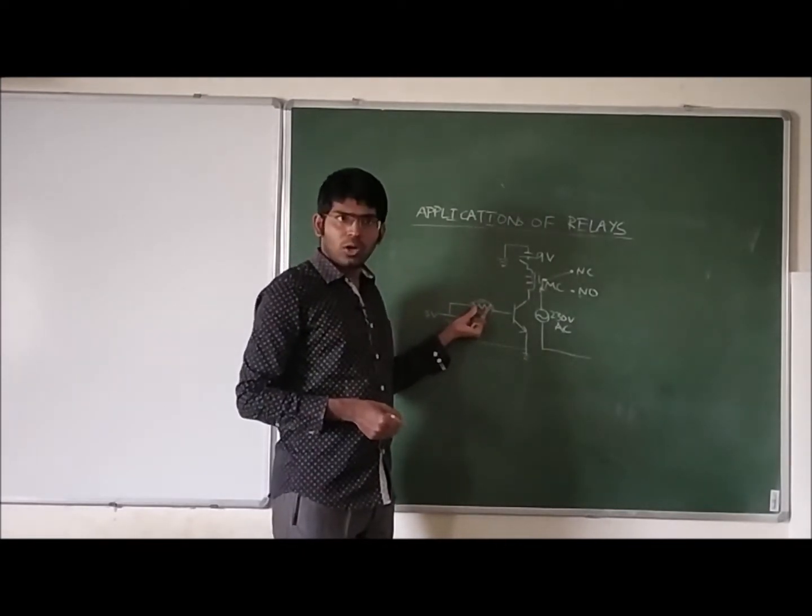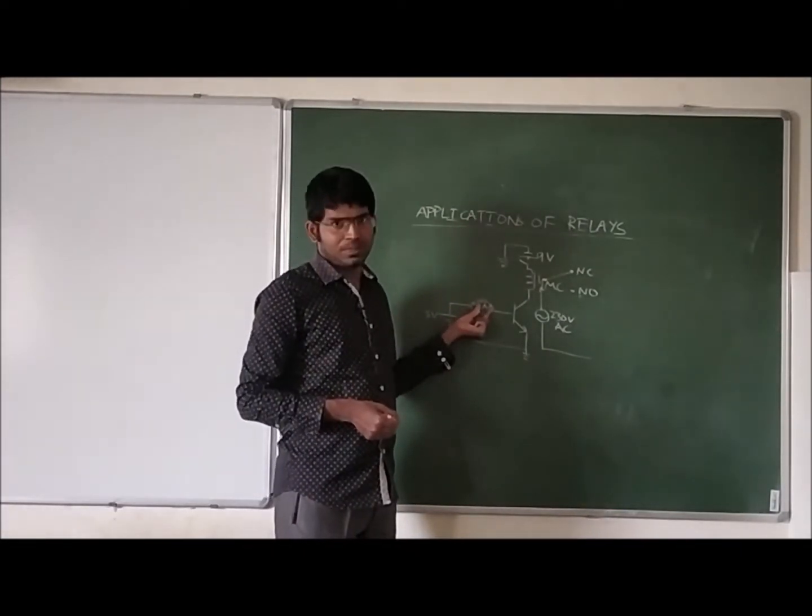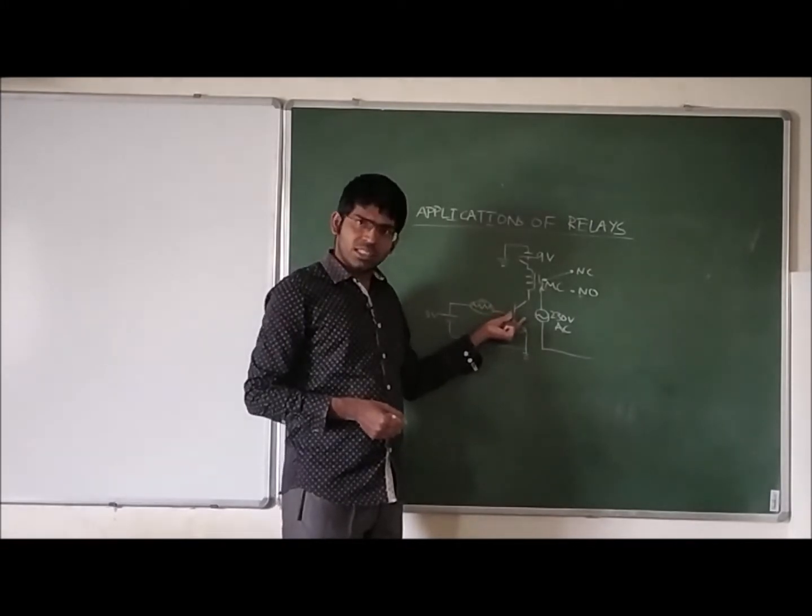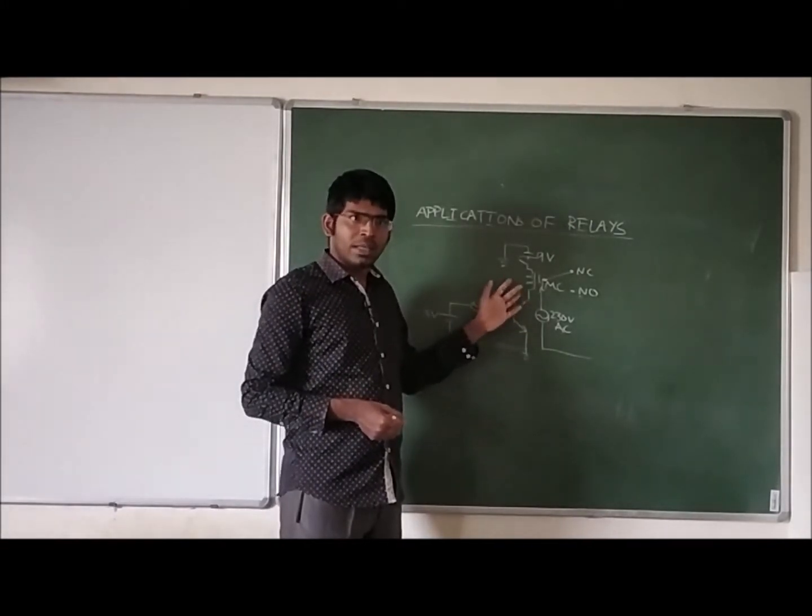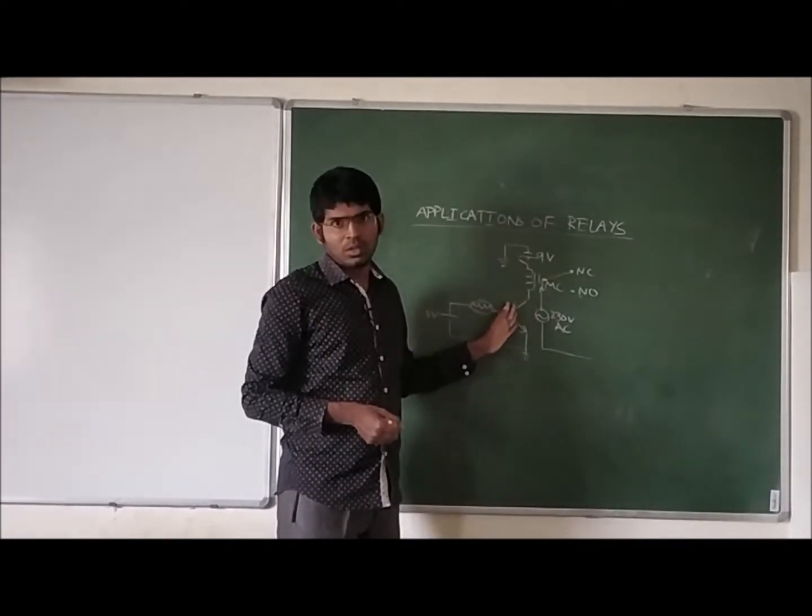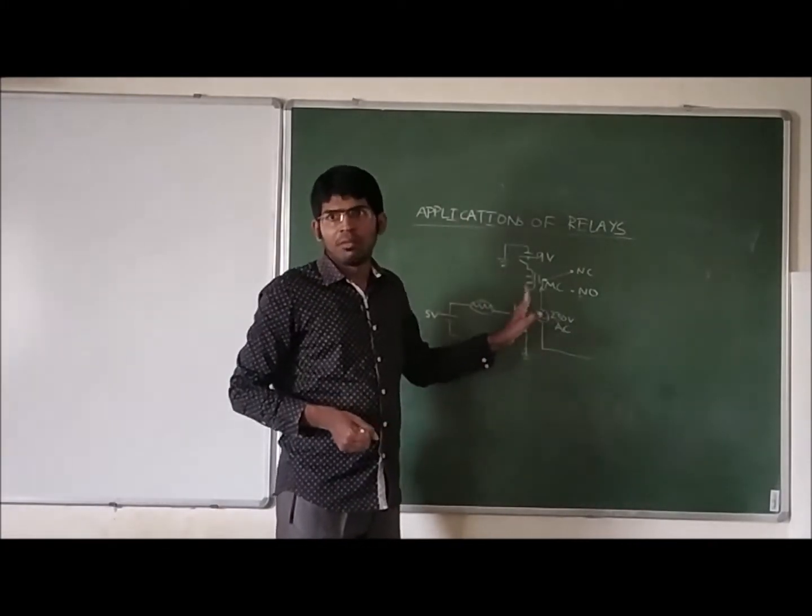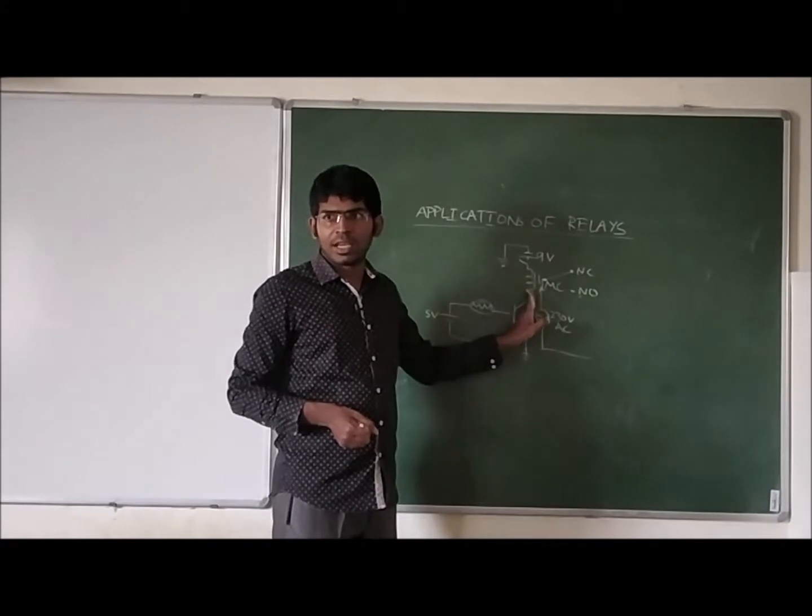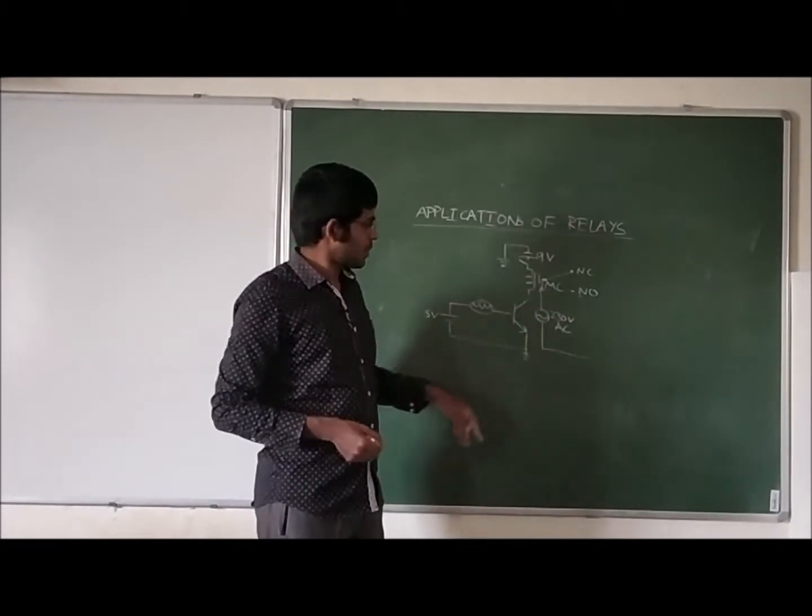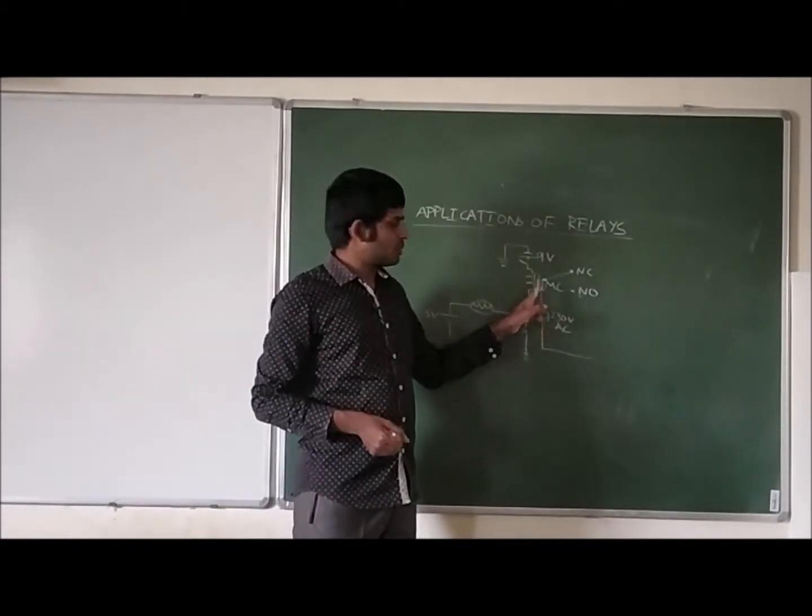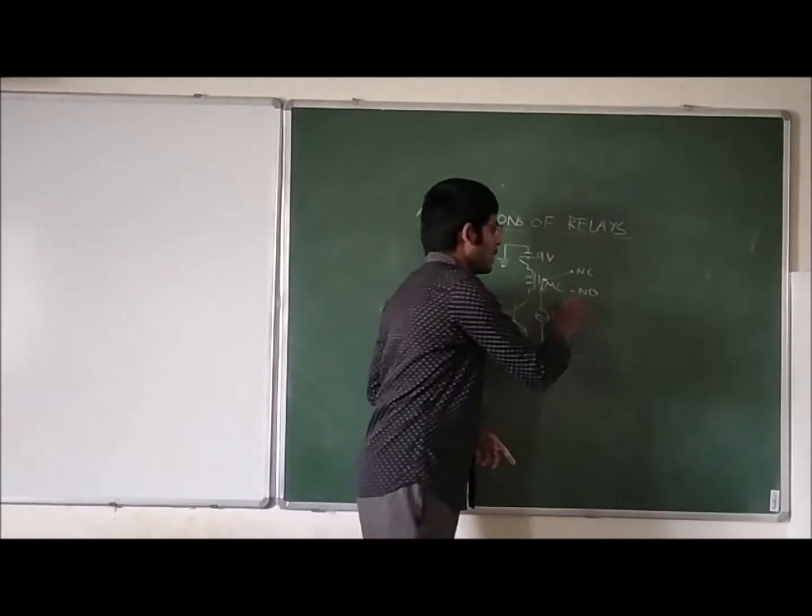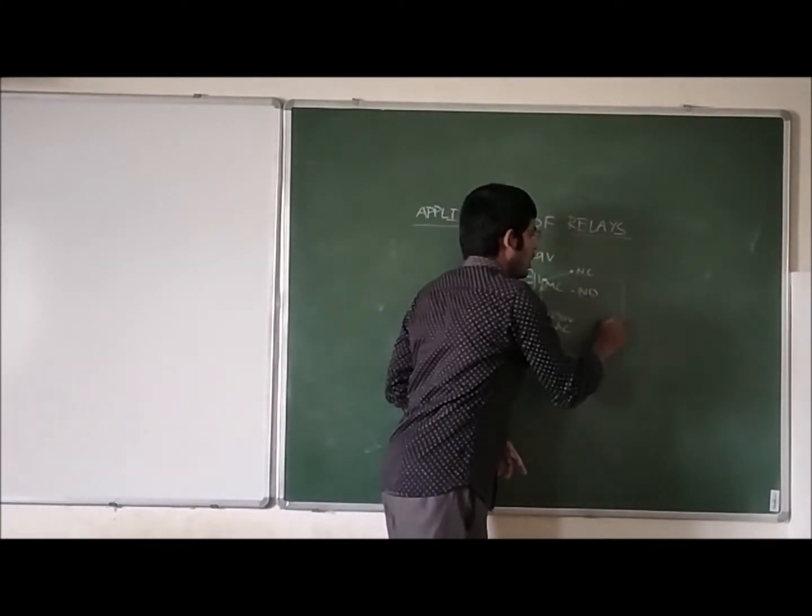This is an LDR, light dependent resistor. This is a transistor, you can assume this as a switch. When the transistor is in on condition it acts like a closed switch. When it is in off condition it acts like an open switch. This is relay. 230 volts AC supply and we have connected a bulb.